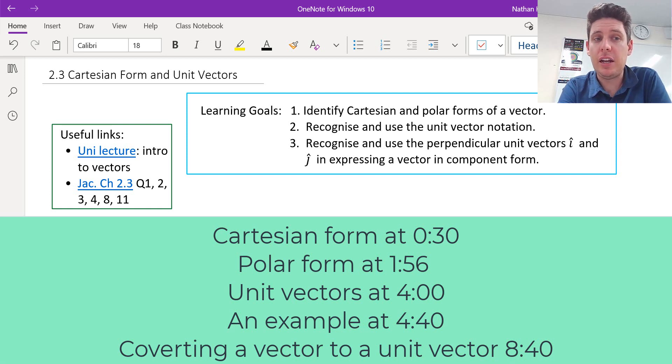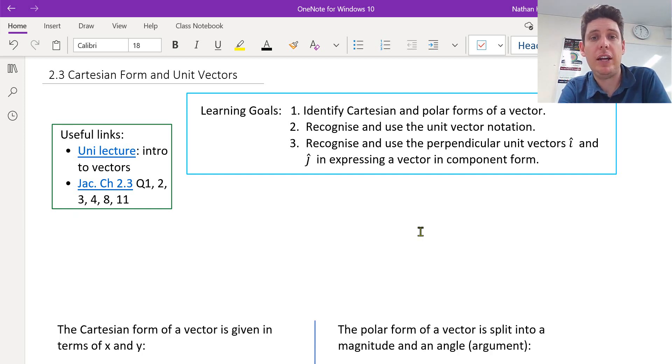Today we're looking at vectors in Cartesian form and polar form and also unit vectors. Previously we learned that vectors are a quantity that has a magnitude and a direction.